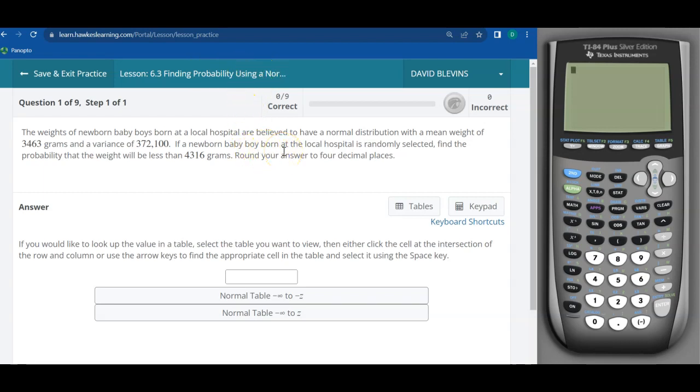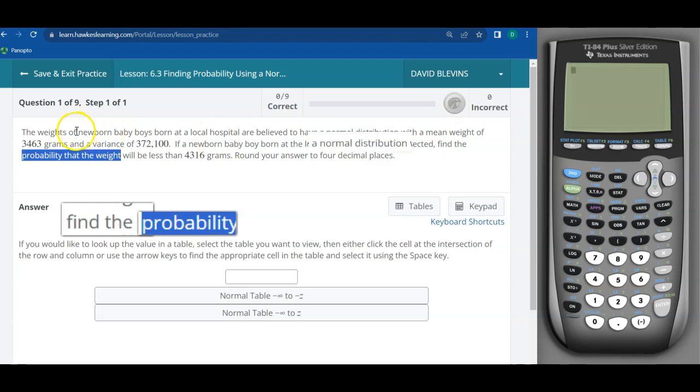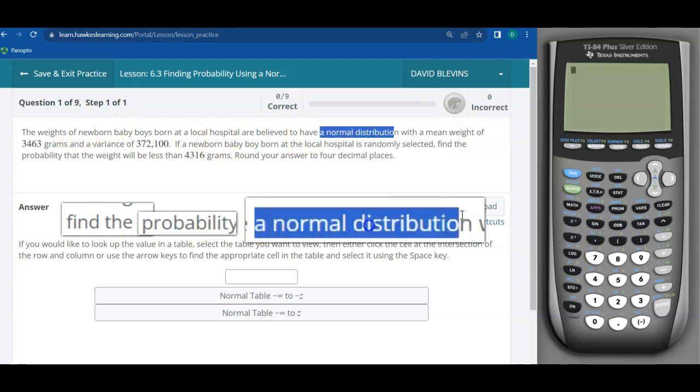So on the TI calculator, if you see a problem that's asking you to find the probability and you also see the phrase that it's normally distributed, then you need this DISTR menu that's above the VARS key.